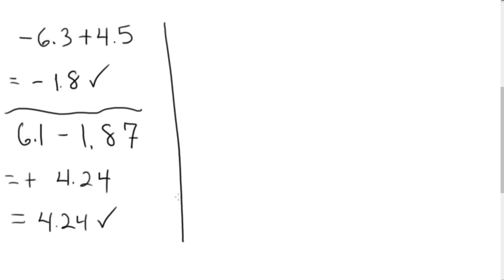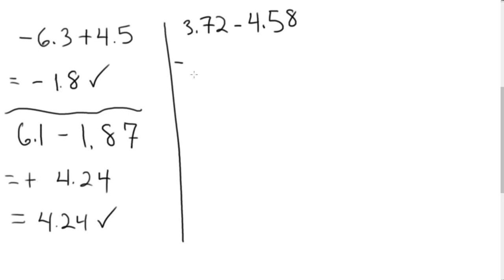Pause the video and try this one: 3.72 minus 4.58. If you paused the video, your thought process should be: I have a larger number that's negative and I have different signs, so I take the difference of the absolute values. So 4.58 minus 3.72 gives me 0.86.